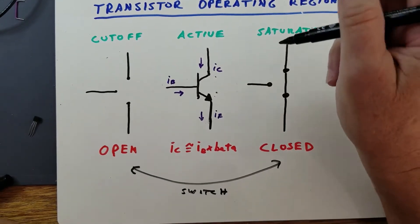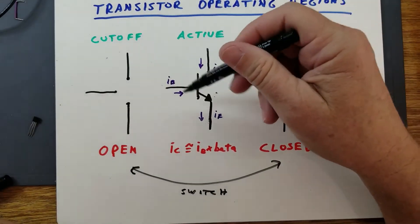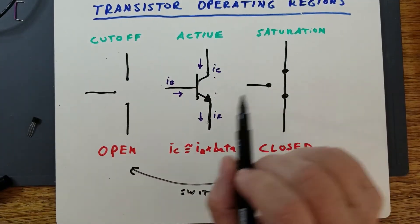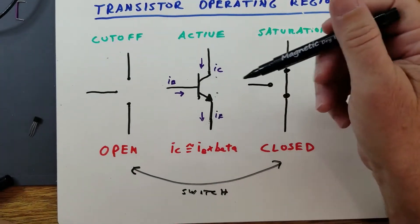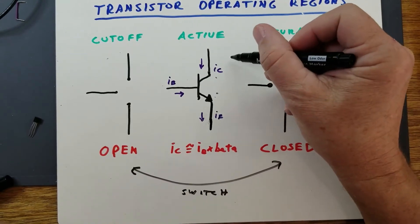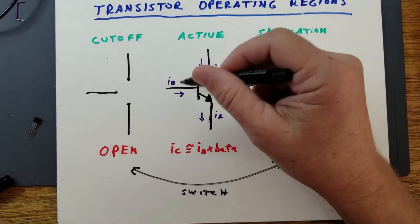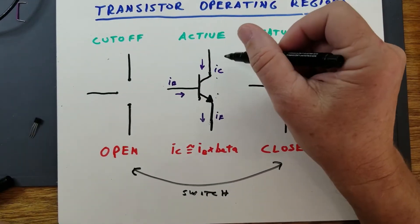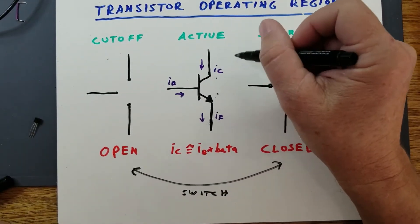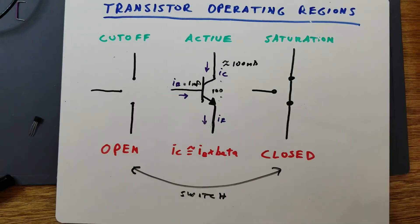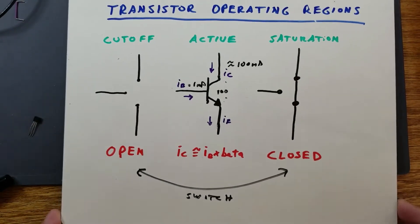Cutoff and saturation are the two modes when a transistor is configured as a switch. The active mode is your amplification mode, where your base current equals your collector current divided by beta. This is another way of looking at the operating regions of a bipolar junction transistor.